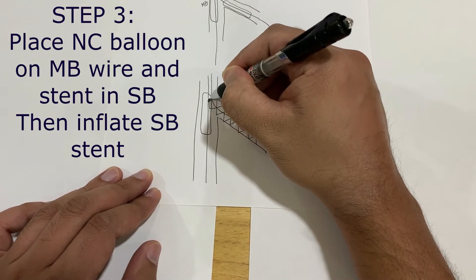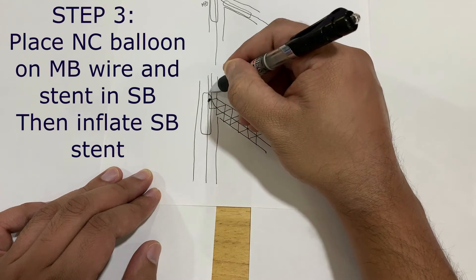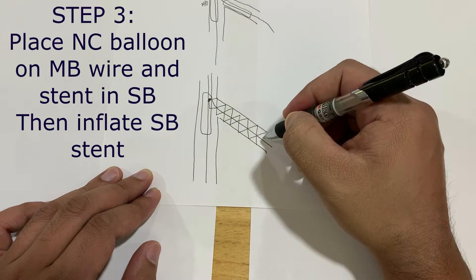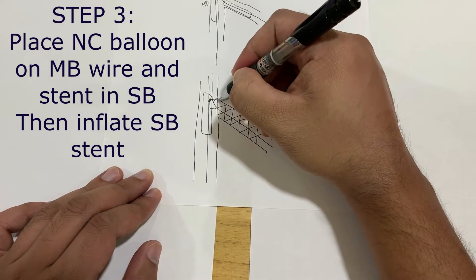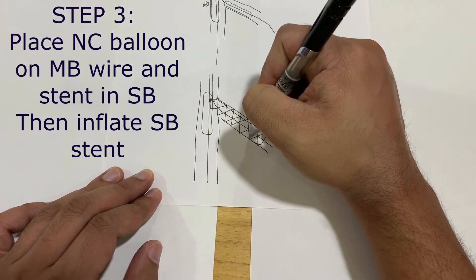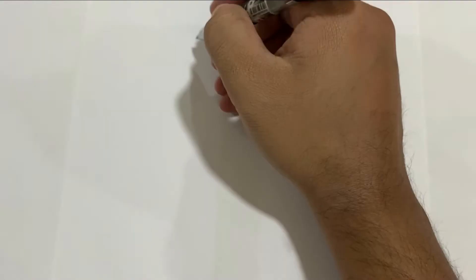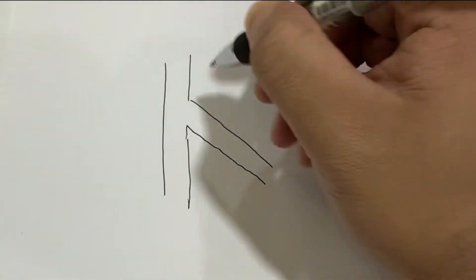Have the proximal marker hanging about two to three millimeter inside the main vessel. Next step is to dilate this with the stent balloon. After the stent is deployed, you inflate the main branch balloon.